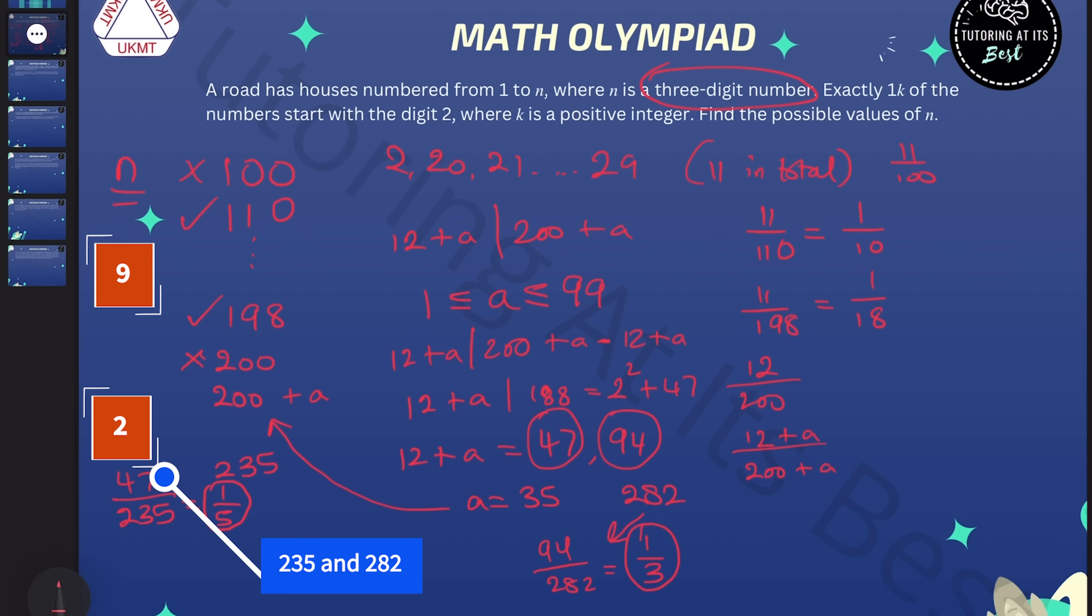And we can see that these are the only possible values of n that are in the 200s. And now it gets a little bit easier because when we get to 300, we have got 111 houses that start with a digit 2. So 300 isn't going to be an allowable value. But if we have 333, that is.